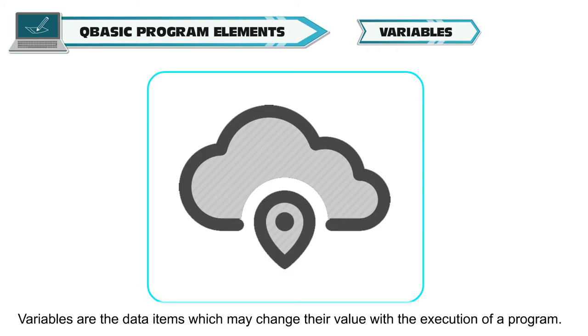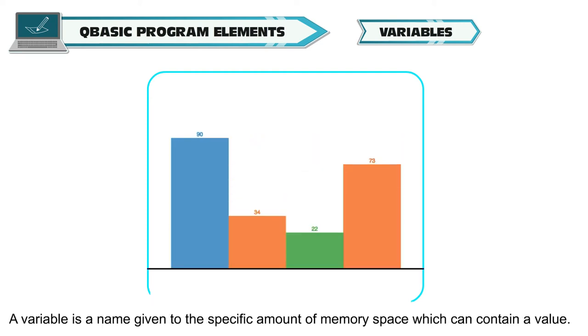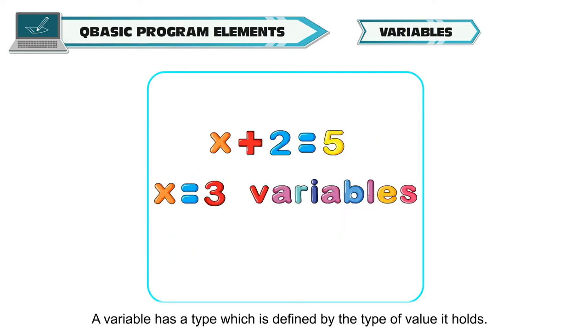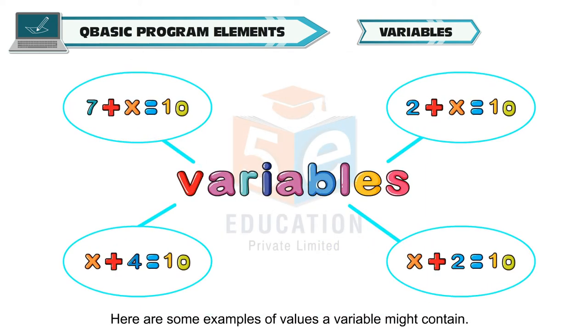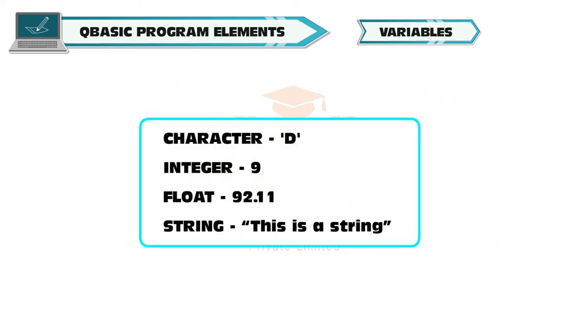Variables: Variables are the data items which may change their value with the execution of a program. A variable is a name given to the specific amount of memory space which can contain a value. A variable has a type which is defined by the type of value it holds. If the variable holds a number, it may be of integer or floating decimal variable. If the variable holds symbols or text, it may be a character variable or a string variable. Here are some examples of values a variable might contain.